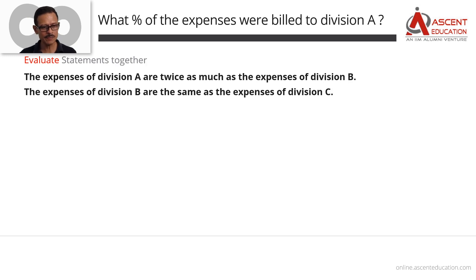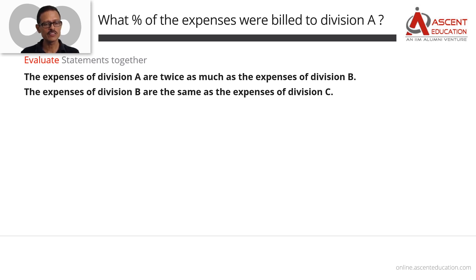Now combining both statements: Statement A says the expenses of Division A are twice the expenses of Division B. Statement B says the expenses of Division B are the same as the expenses of Division C. Let B equal x, so C equals x and A equals 2x.